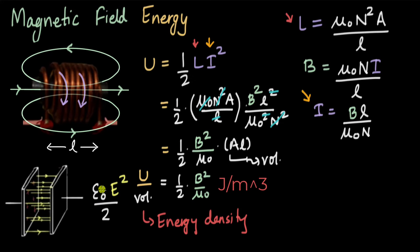We can also notice that ε₀ usually appears in the numerator in electric field relations but appears in the denominator in the energy density, while μ₀ usually appears in the numerator in magnetic relations but is in the denominator here too. Both energy densities represent work done by a battery — one to arrange charges, the other to build up current through an inductor. When you study electromagnetic waves, you'll realize these two energy densities are exactly equal to each other.